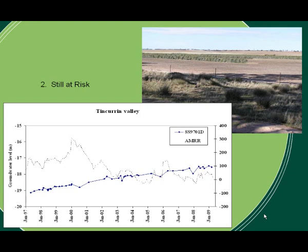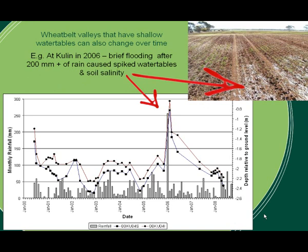Despite changes in rainfall conditions — shown by the black dotted line — the rising trend is fairly continuous. So we've got two types of valleys: those that are saline and those that are still at risk. For those with shallow water tables, some valley soils move in and out of salinity, or at least they move into salinity in episodes or in pulses.